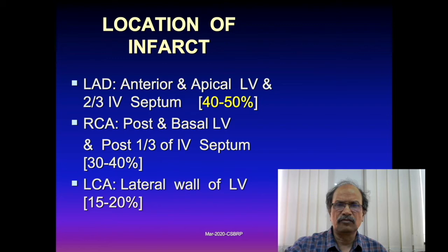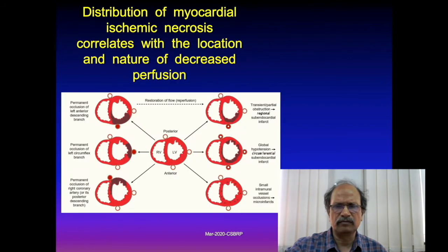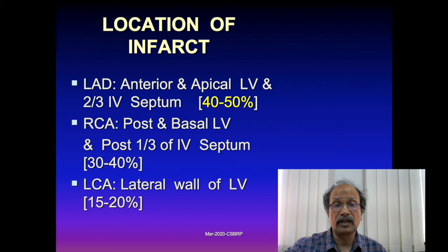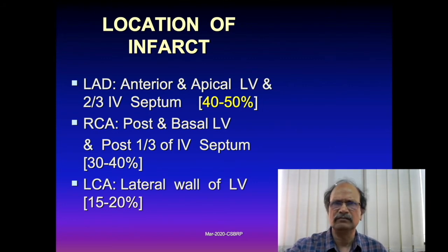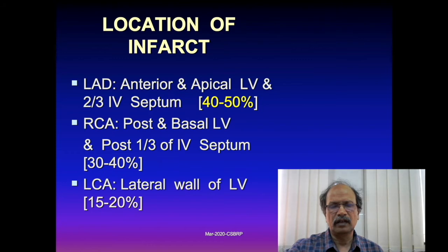If the left circumflex artery is involved, the lateral wall of the left ventricle undergoes infarction. The middle left diagram shows the lateral wall of the left ventricle marked in black as the area of infarction. The left anterior descending is the most common artery involved, followed by the right coronary artery, and lastly the left circumflex.